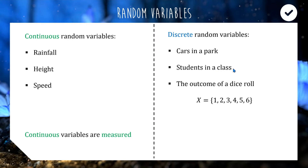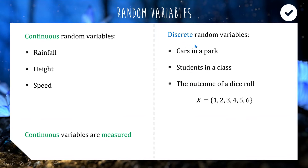One key difference between continuous and discrete data is that discrete data typically involves whole numbers with gaps between variable points. For example, if there are 25 students in a class, the next value is 26. But if your height is 180 centimetres, the next height could be 180.00001 centimetres — there are no gaps. So continuous has no gaps, while discrete does. Simply: discrete means counting, continuous means measuring.